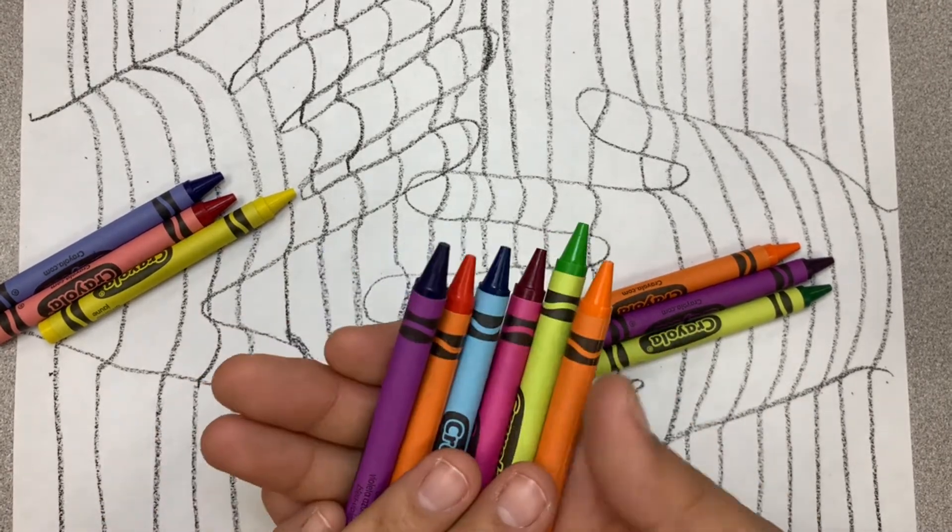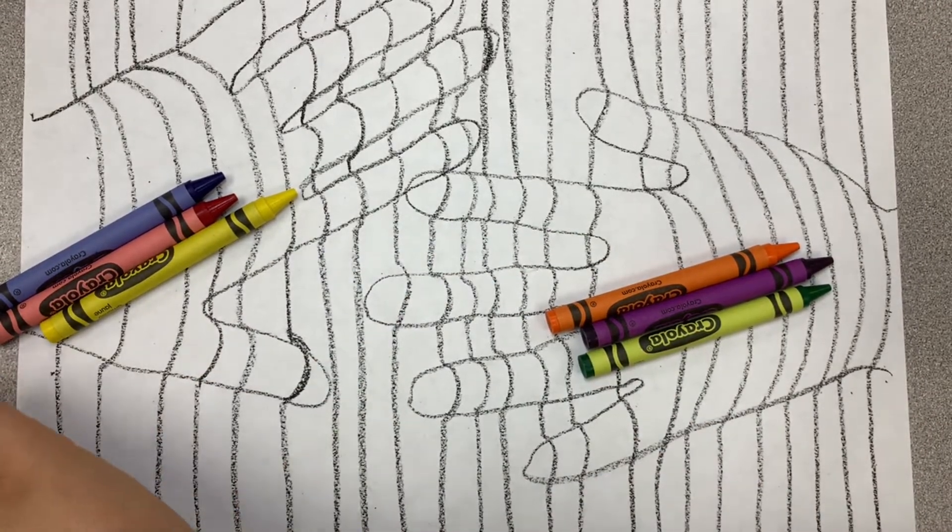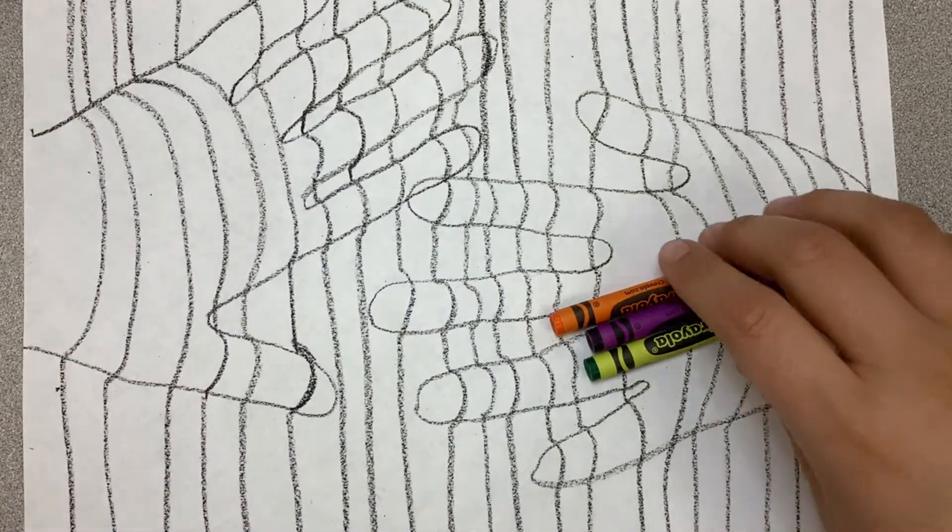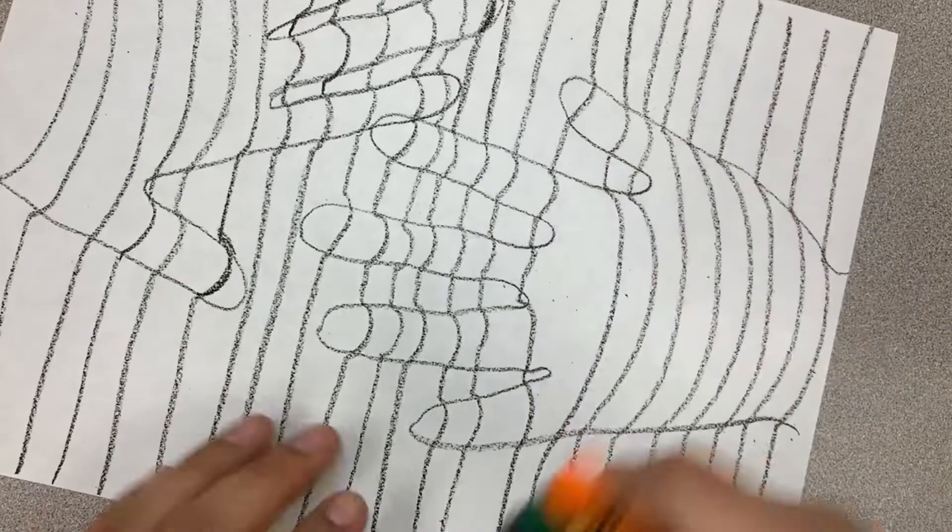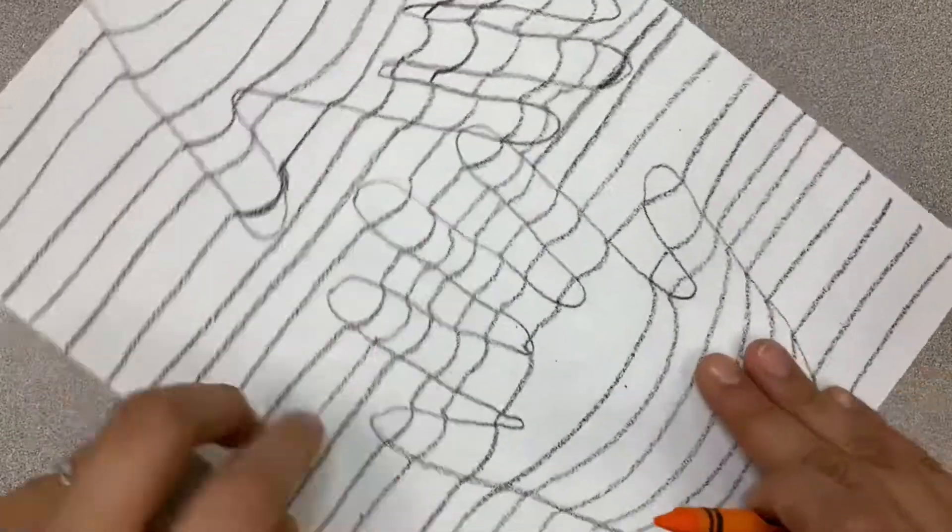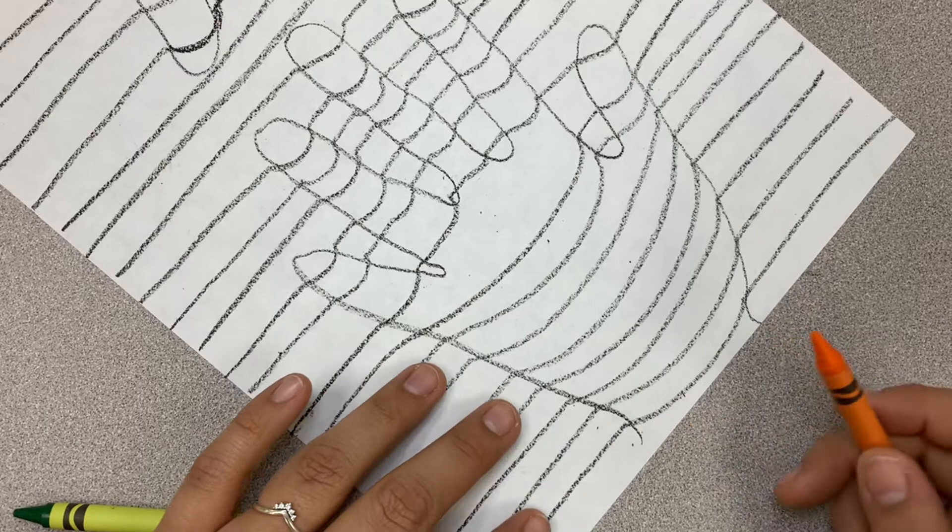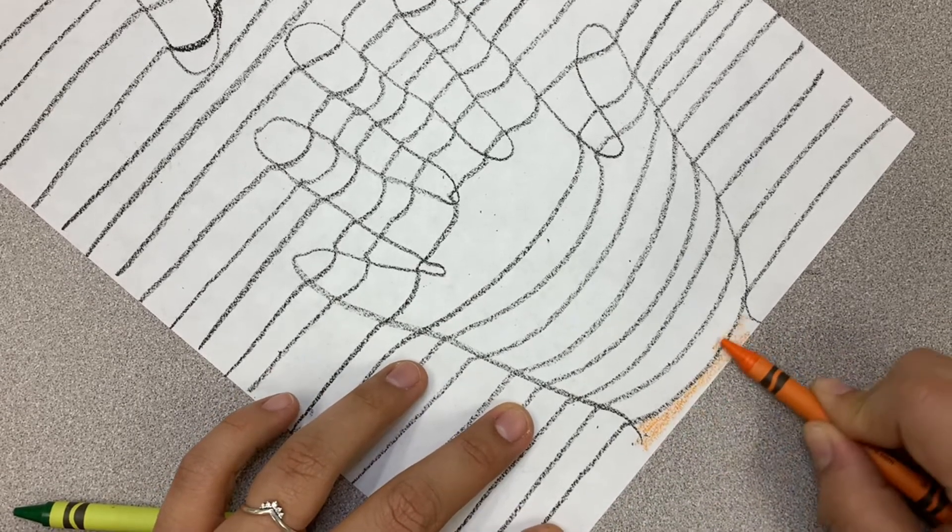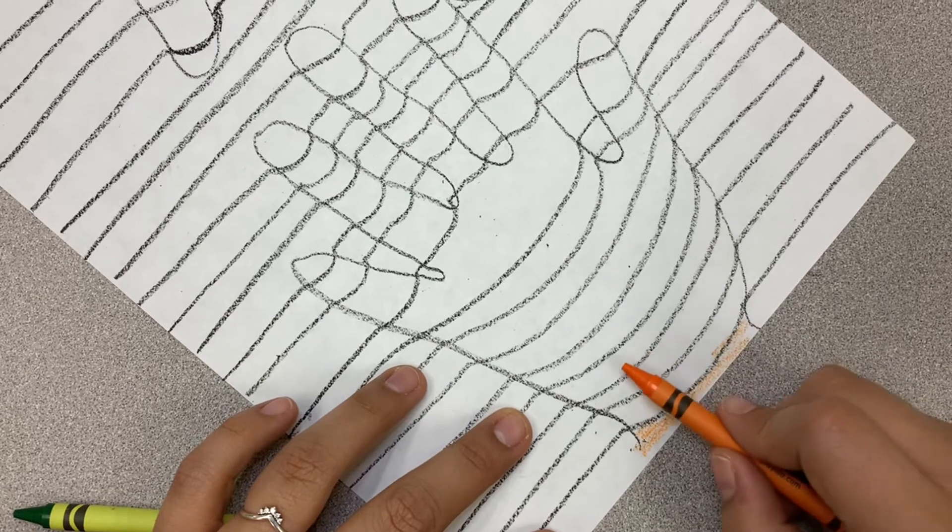So right here I have my hands. So what I want us to do is have our primaries out, that's red, yellow, and blue, and our secondaries, that's green, violet, and orange. I want you to color one of your hands secondary color and your hands primary.